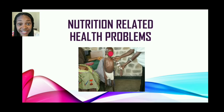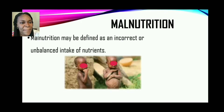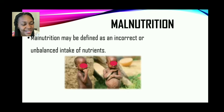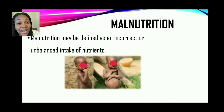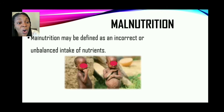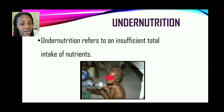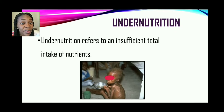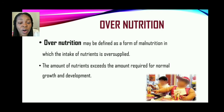Now let us look at the nutrition-related health problems. Malnutrition may be defined as an incorrect or unbalanced intake of nutrients. Oftentimes when persons think of malnutrition, they think it means an inadequate amount of nutrients. But malnutrition may mean incorrect or unbalanced intake, so persons may be overnourished or undernourished. Undernutrition refers to an insufficient total intake of nutrients, meaning the nutrients taken in are not enough to supply the body's needs, and therefore persons become undernourished.